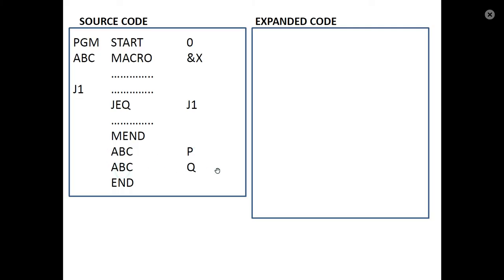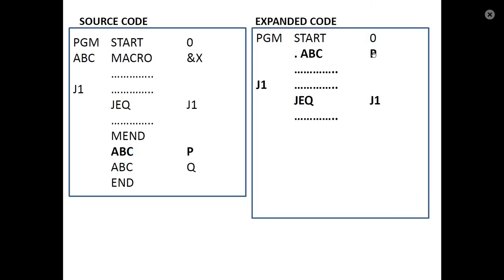There are two macro calls: ABC P and ABC Q. The macro body has 4 lines. In the expanded code, for the first macro call, we place the expanded lines including a jump label J1.